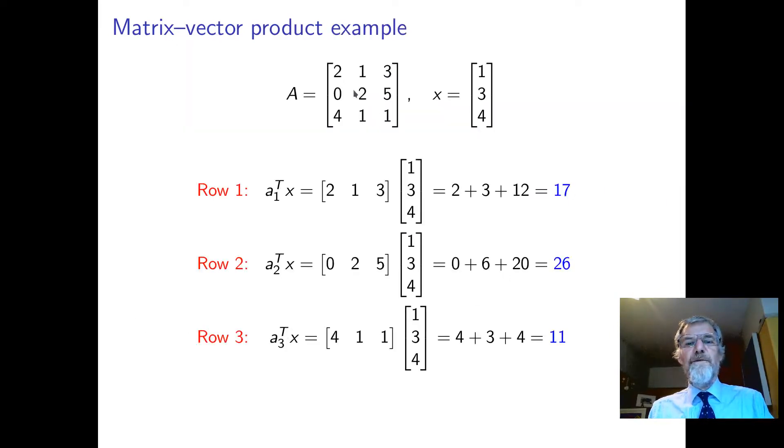Here's some examples. Here's a matrix A and here's a vector x. To multiply A times x, what we do is get the first row 2, 1, 3 and multiply it by 1, 3, 4. That's 2 times 1, 1 times 3, 3 times 4, adds up to 17. Here we've got 0 times 1, 2 times 3, 5 times 4, and that adds up to 26. Each of the rows has gotten together with this column and we've taken the dot product. So the answer is the column vector 17, 26, 11.